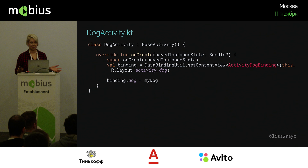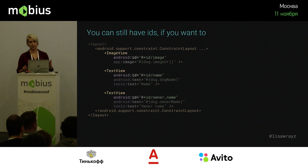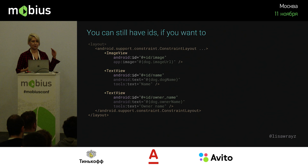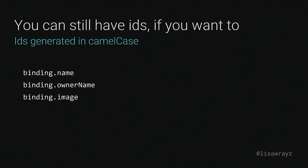If we do want IDs for setup code, you can put them in as normal. Instead of `findViewById`, data binding handles it in a very performant way. At compile time it generates references, and at run time it does one pass through the layout instead of multiple passes with each `findViewById` call. In the binding you get a public final field referring to each view. These IDs are generated in camelCase, regardless of underscores in your XML.